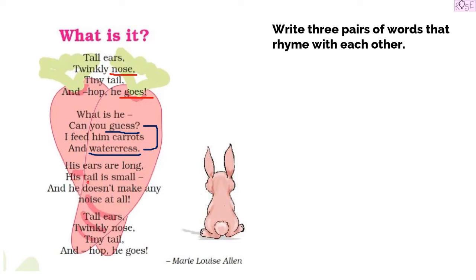In the third paragraph, 'his ears are long, his tail is small, and he doesn't make any noise at all,' the two rhyming words are 'small' and 'all.' In the last paragraph, which is similar to the first one, we have the same set of rhyming words: 'nose' and 'goes.' So let us write three pairs of rhyming words.